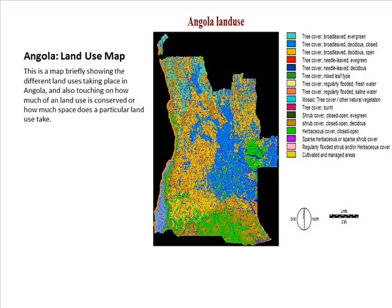The first map I will be looking at is the Angolan land use map, briefly showing the different land uses taking place in Angola, and also touching on how much space a particular land use conserves or takes up.